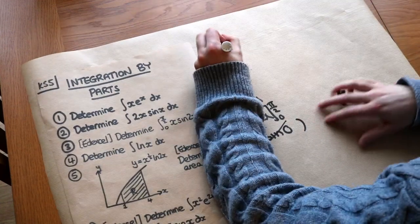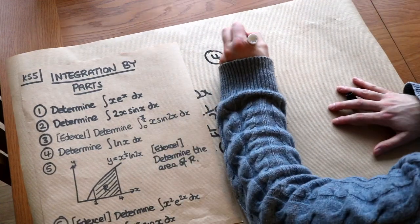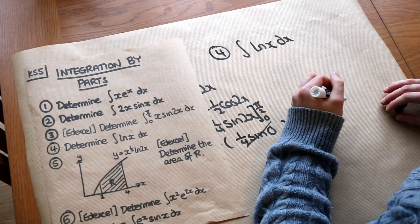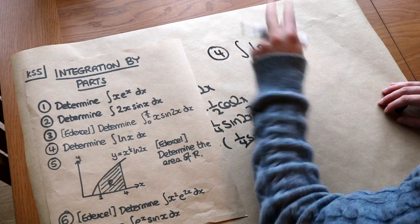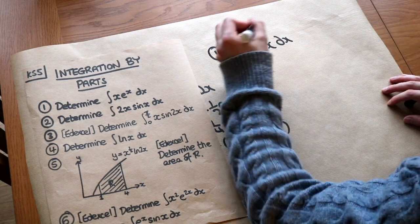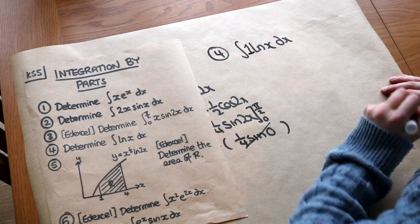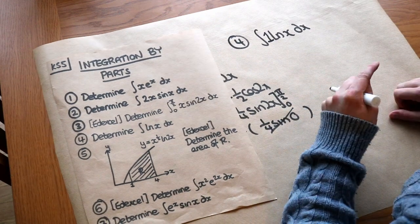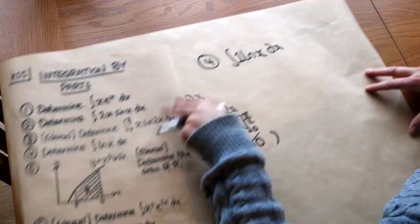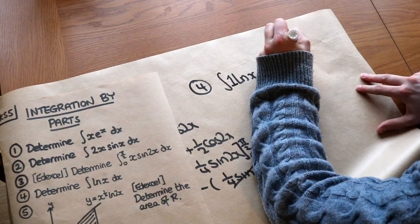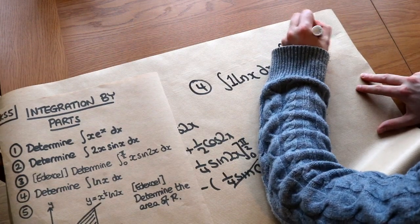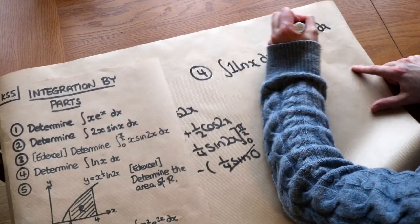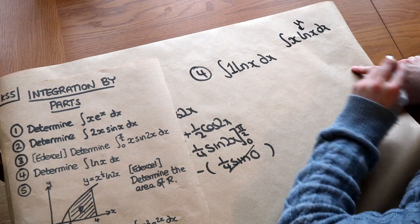Now this is an interesting one — we want to integrate ln(x). This doesn't even look like a product of two expressions; it's just one thing, ln(x). But the trick is to put a 1 in front of it. In general, whenever you have ln(x) as one of the things in integration by parts, you should always make that the u. So for example, even if you had the integral of x·ln(x), you should make ln(x) the u — not the x.